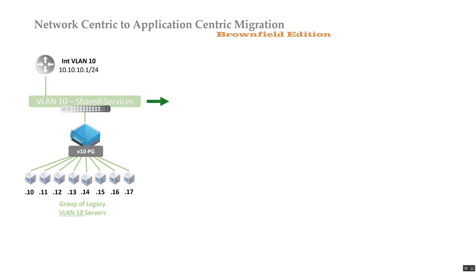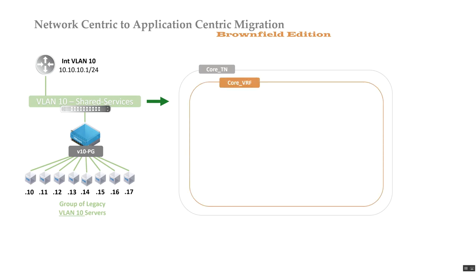We want to model this legacy environment in ACI. There are many strategies for doing that, which I won't detail in this video. Let's say VLAN 10 is part of the core routing table, so I'm going to create a core tenant. In ACI I need a VRF to comply with the construct model, so within the tenant I create one or more virtual routing and forwarding instances — in this case, the core VRF.